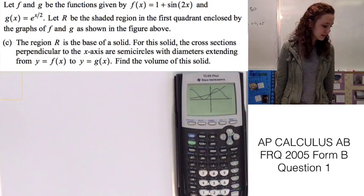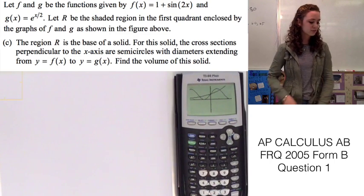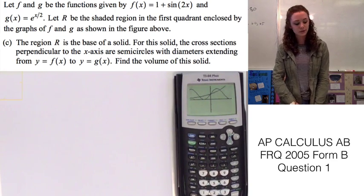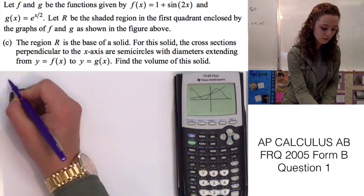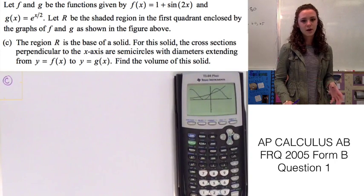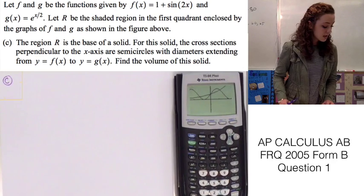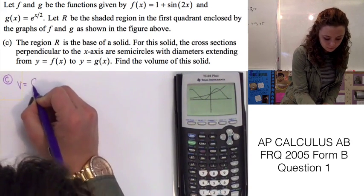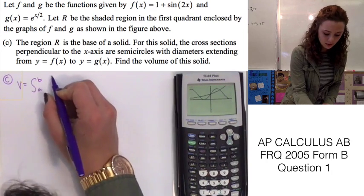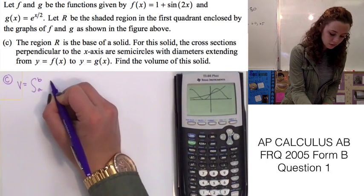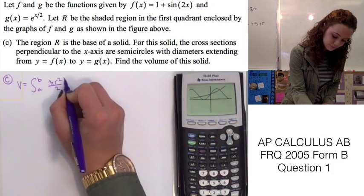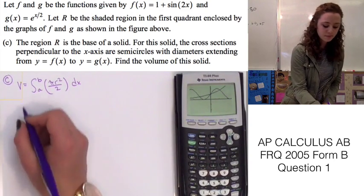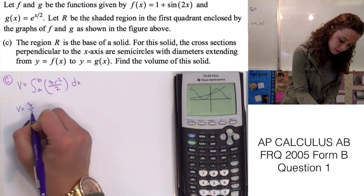For part C, the region R is the base of a solid. The cross sections perpendicular to the x-axis are semicircles with diameters extending from y equals f of x to y equals g of x. We need to find the volume of this solid. Since we're using semicircles as cross sections, the volume will be equal to the integral from a to b of the area of a semicircle, which is pi r squared over 2 dx. We can simplify by taking pi over 2 outside the integral, so v equals pi over 2 times the integral.